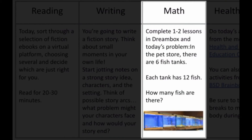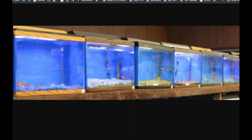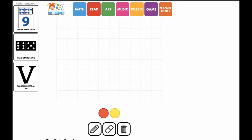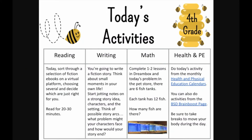Here's today's math problem: In a pet store there are six fish tanks, and each tank has 12 fish — how many total fish are there? Beyond just the answer, show how you solved it and what strategy you used. You can use numbers, drawings, or the link to digital counters provided as a manipulative tool.